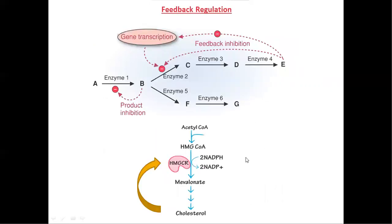The next regulation method is feedback regulation, which is different from feedback inhibition. In feedback inhibition, the end product inhibits the activity of the regulatory enzyme. But in feedback regulation, the end product inhibits the synthesis of the regulatory enzyme by interfering with the gene transcription process. HMG-CoA reductase is a perfect example of feedback regulation. Cholesterol is the end product; when cholesterol levels increase, cholesterol inhibits the synthesis of HMG-CoA reductase.